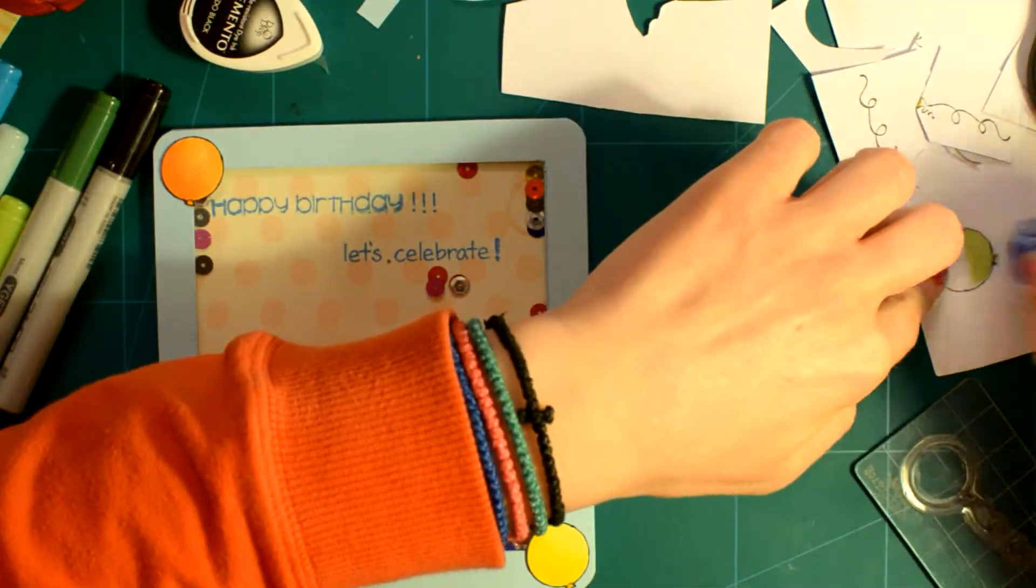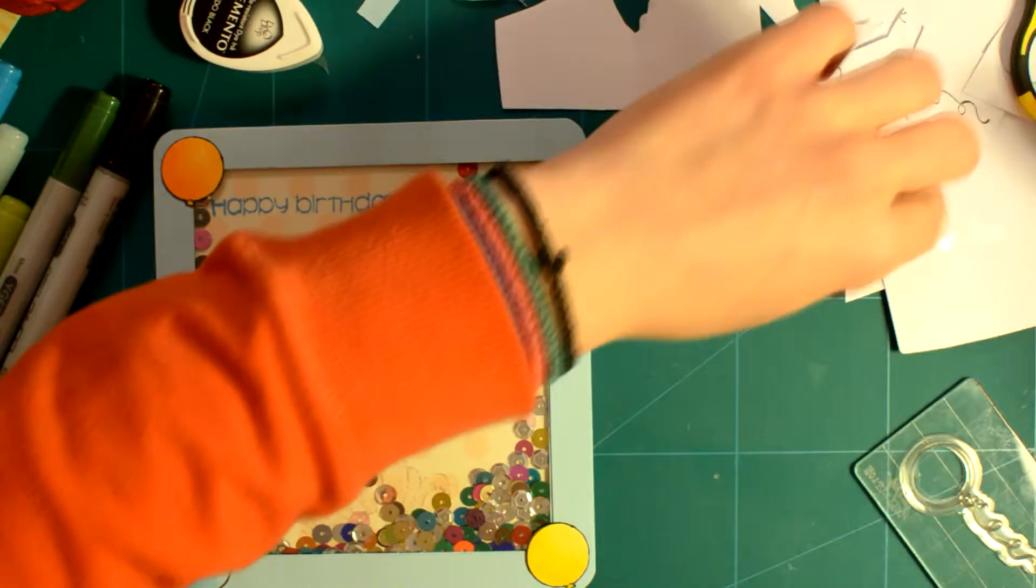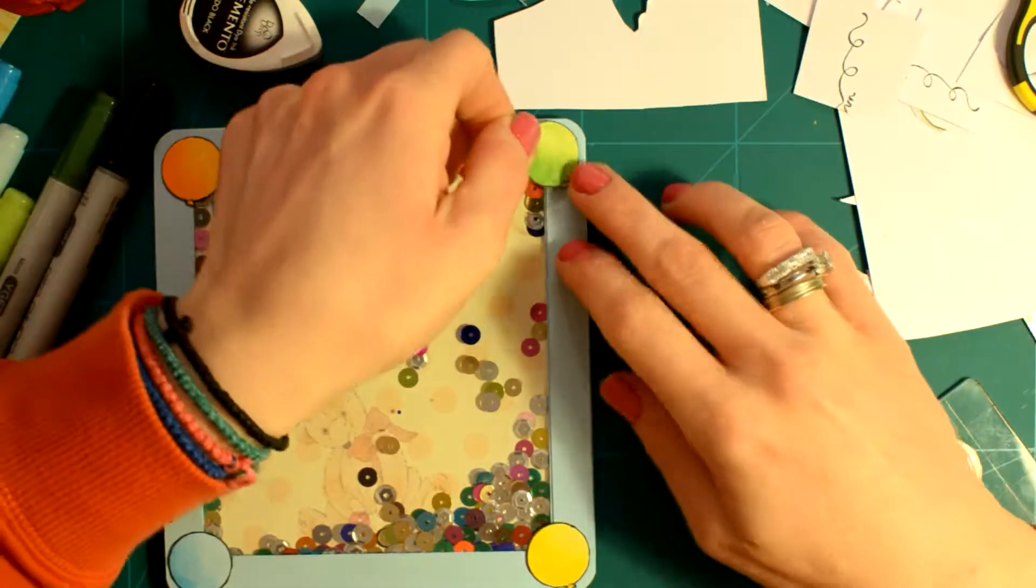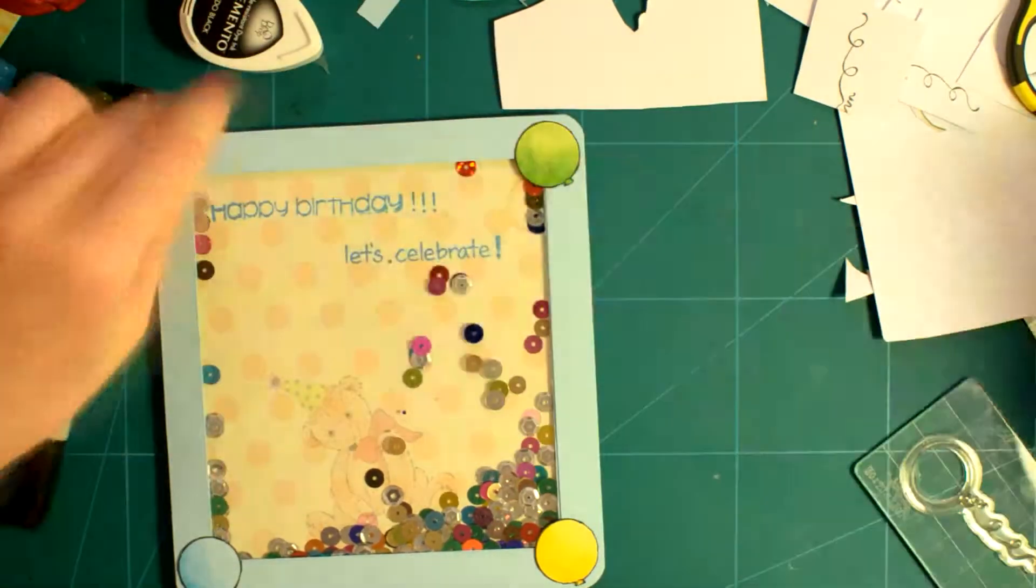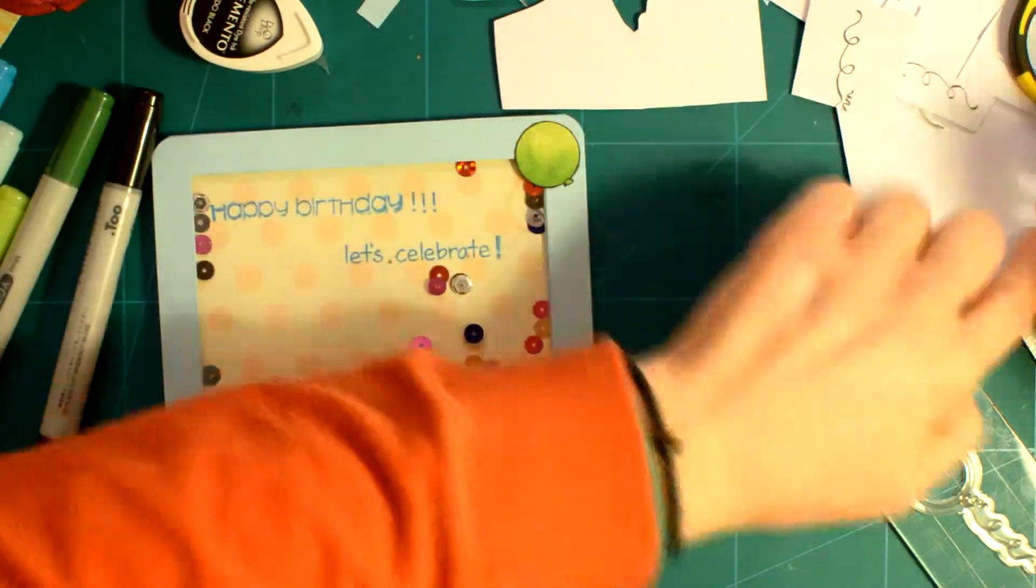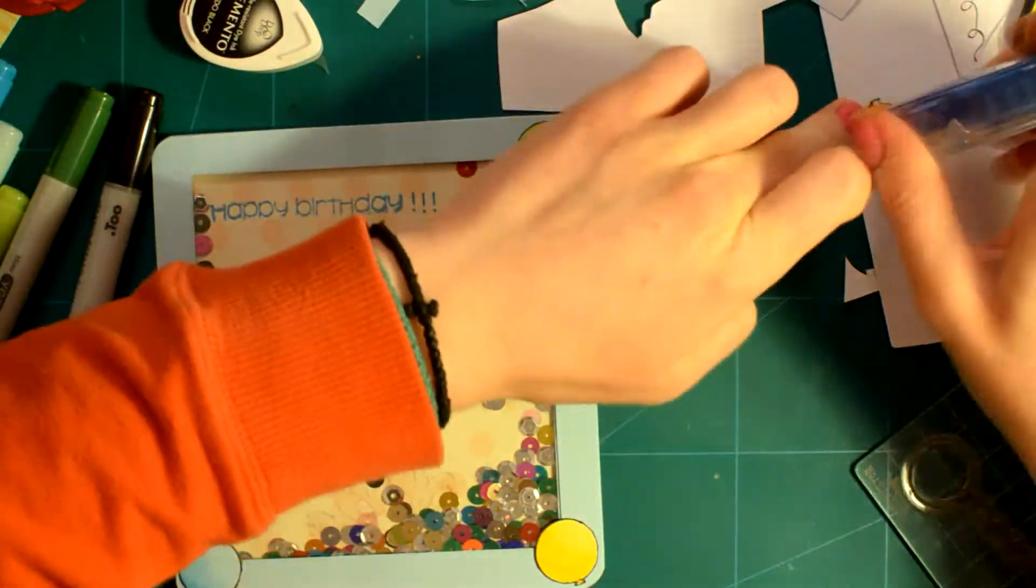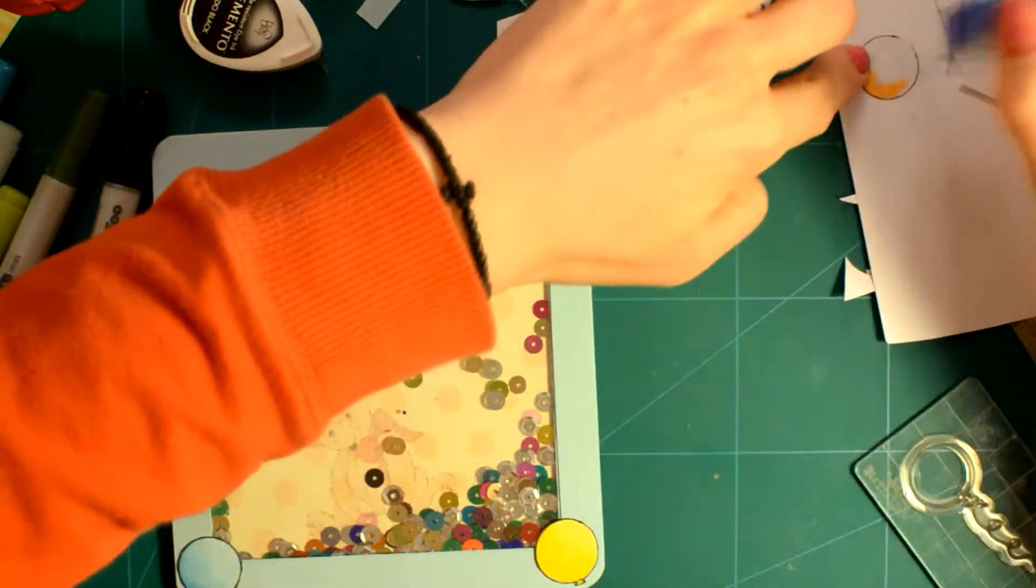I fuzzy cut them and adhered them with Tombow Runner once again. On the top balloons, I decided to stamp the strings using Tsukiniko Memento Dewdrops in Tuxedo Black.